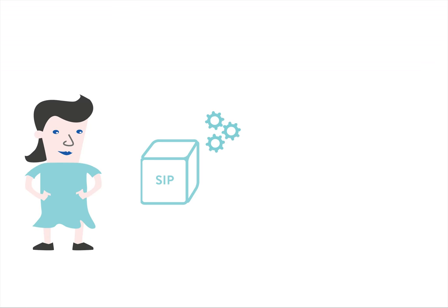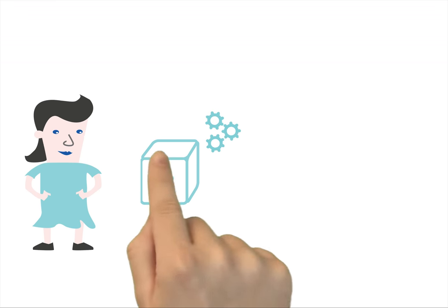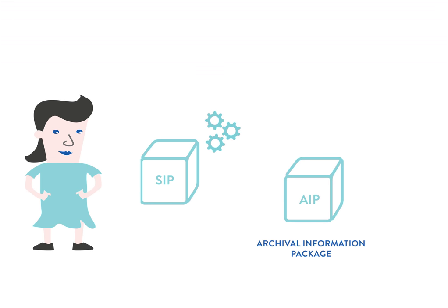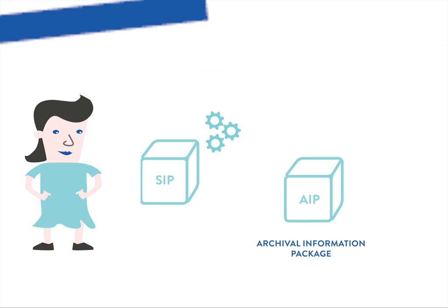The data is then ingested into ARCHE with all its metadata and becomes an Archival Information Package. As soon as the data is ingested, it gets assigned a handle to allow for persistent referenceability. Then, it is published.